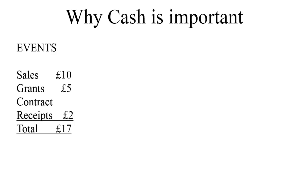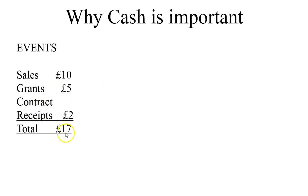We start with the operating events. Companies are engaged in sales of their products and services. Money may also come in through government initiatives, contract receipts, and other irregular receipts. These all combine to make a total of $1,700,000.